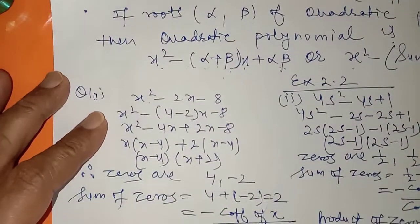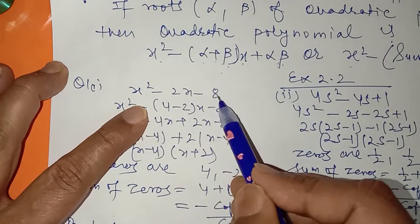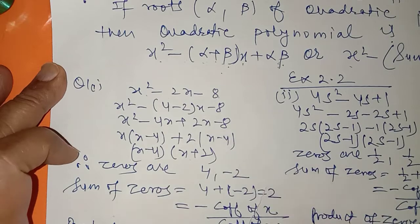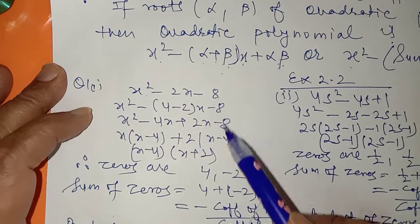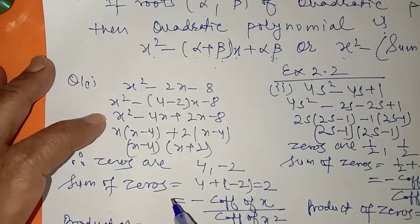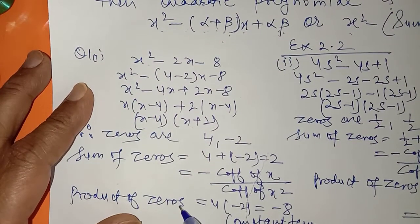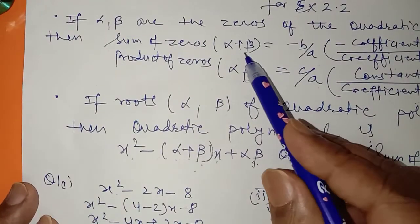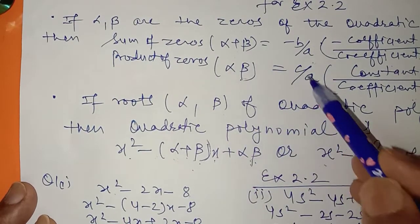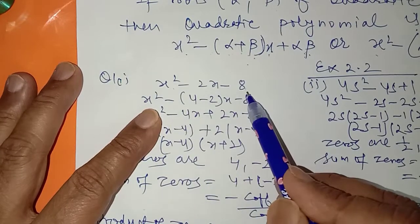Now in exercise 2.2, question number 1, a quadratic polynomial is given. In all the parts of question number 1 you should first find the zeros of the polynomial, and then find the relationship between the sum of the zeros and the product of the zeros. The sum of the zeros should equal minus b upon a, and the product of the zeros should equal c upon a. You know how to find the roots of this quadratic polynomial.